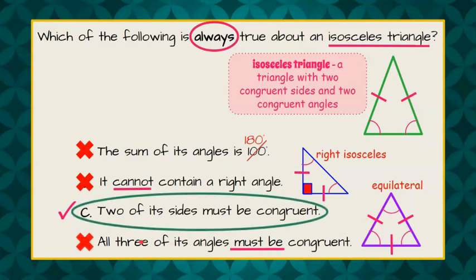So, our correct answer is choice C. Two of its sides must be congruent.